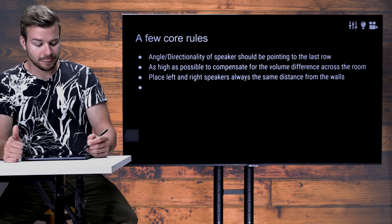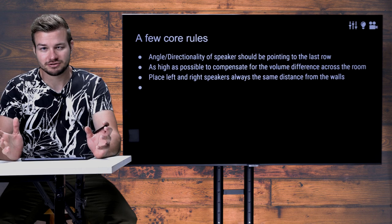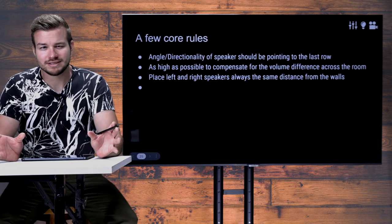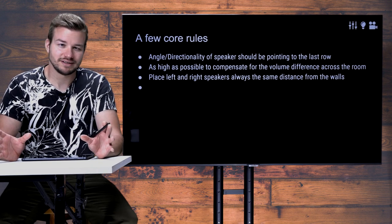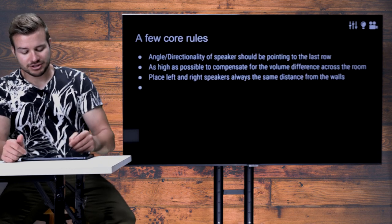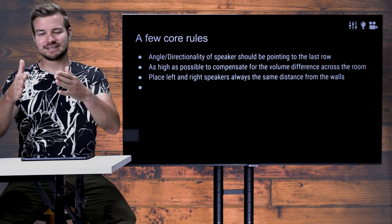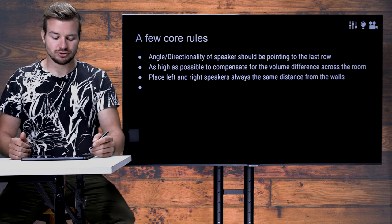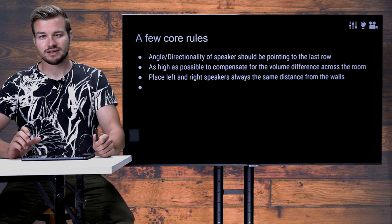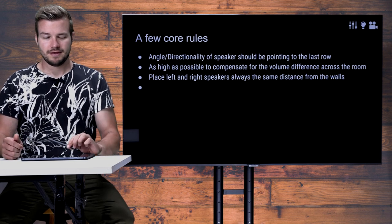To summarize the main points: consider the speaker angle, hang speakers as high as possible to compensate for volume differences across the room, and always make sure the left and right speakers are at exactly the same distance from the surrounding walls to avoid comb filter effects. Set left and right speakers straight — not too far out and not too far in — so their coverage angles are used as efficiently as possible. I may also link another video explaining how to set up speakers in a venue. See you in the next video.